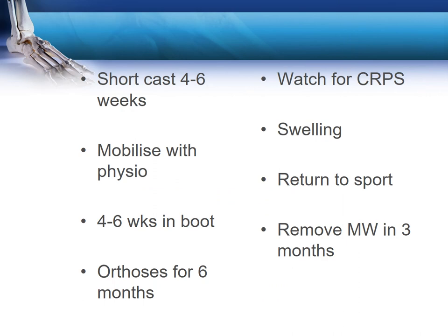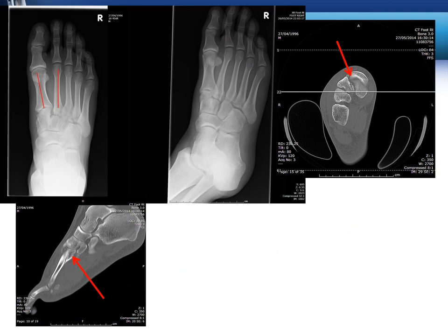Post-operatively, patients are managed in a short non-weight-bearing plaster usually for about six weeks, with care taken to avoid complex regional pain syndrome — definitely a risk in crush injuries. After cast removal, patients are mobilized weight-bearing with physiotherapy, usually using a walking boot for a further six weeks. Questions regarding removal of metalwork depend on whether the patient has had a bridging plate or primary arthrodesis, and also on the patient's demands. A sporty patient may have metalwork removed around six months, and patients often require orthotic support for at least six months.